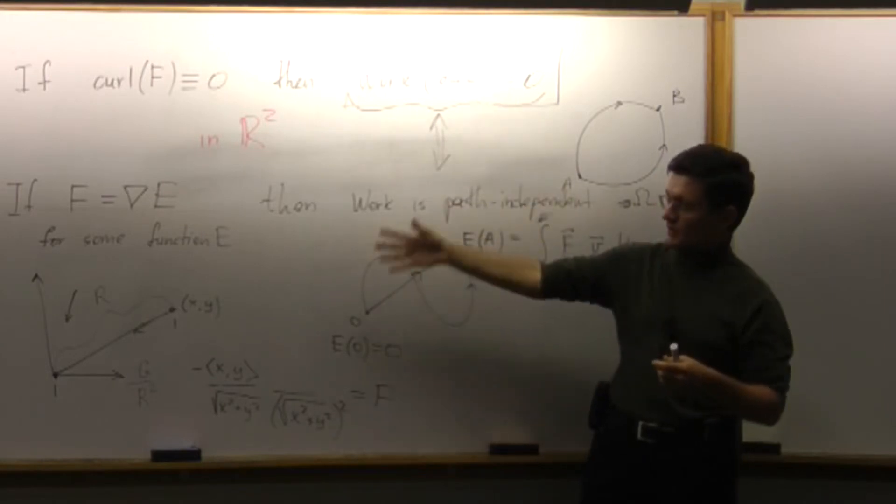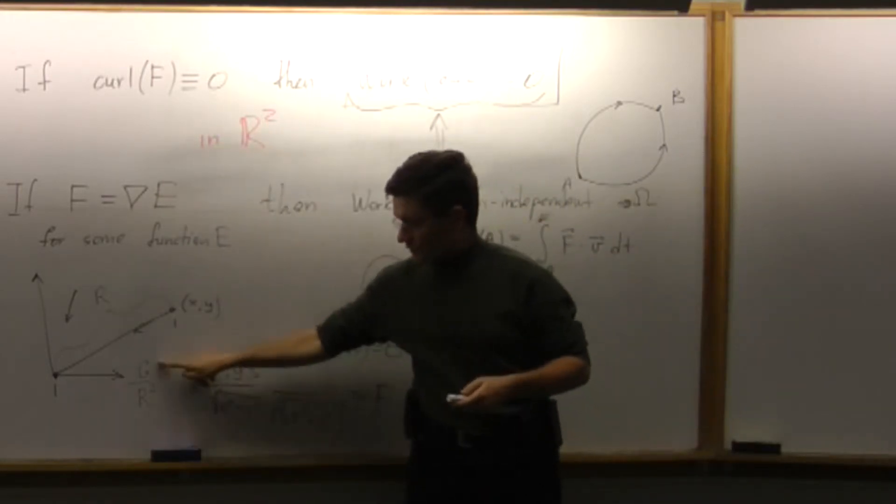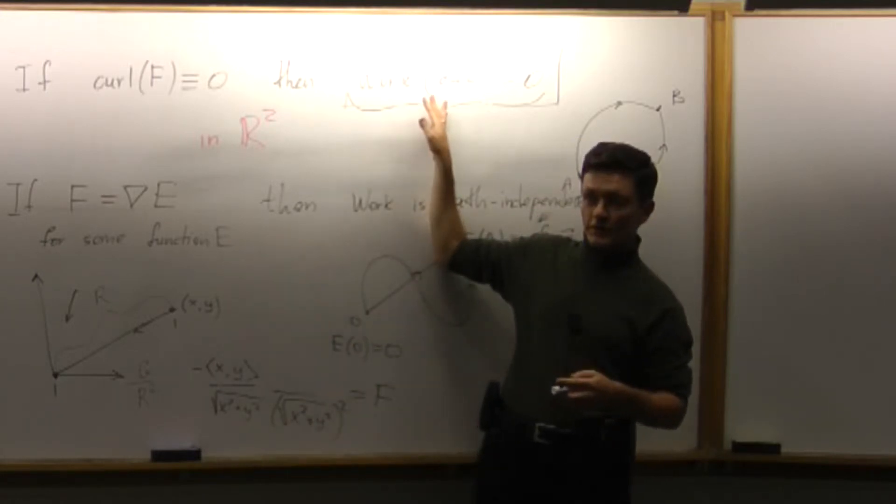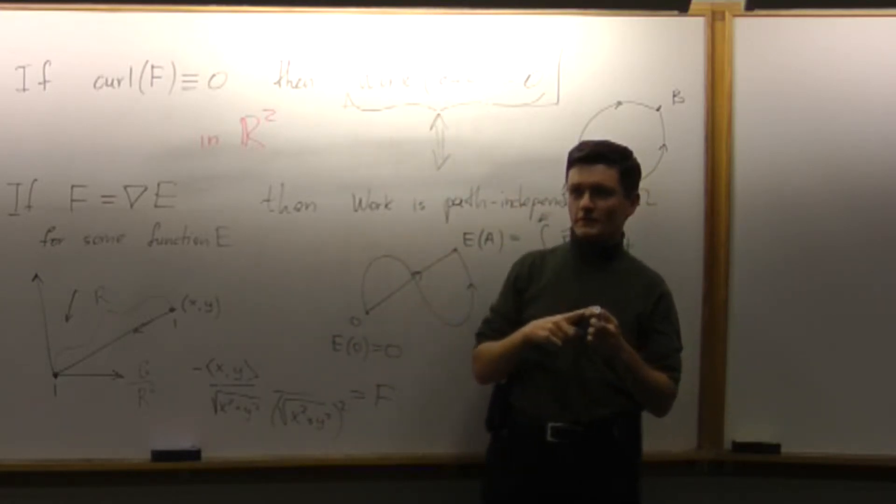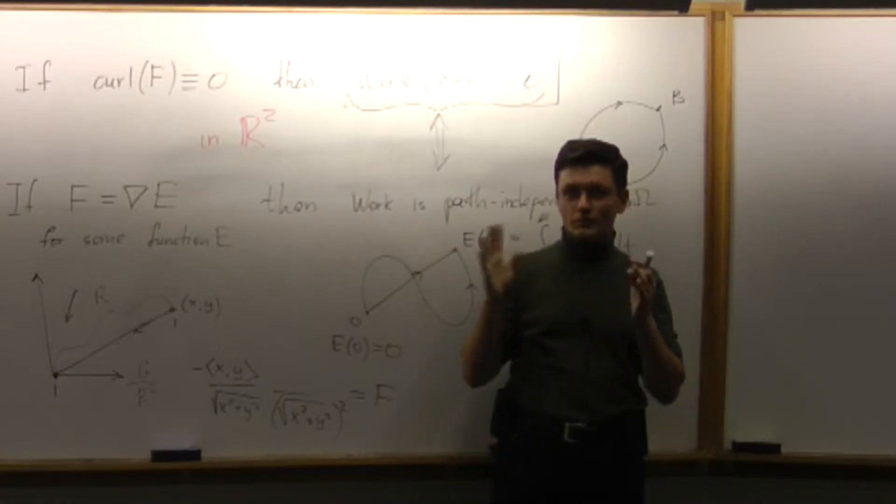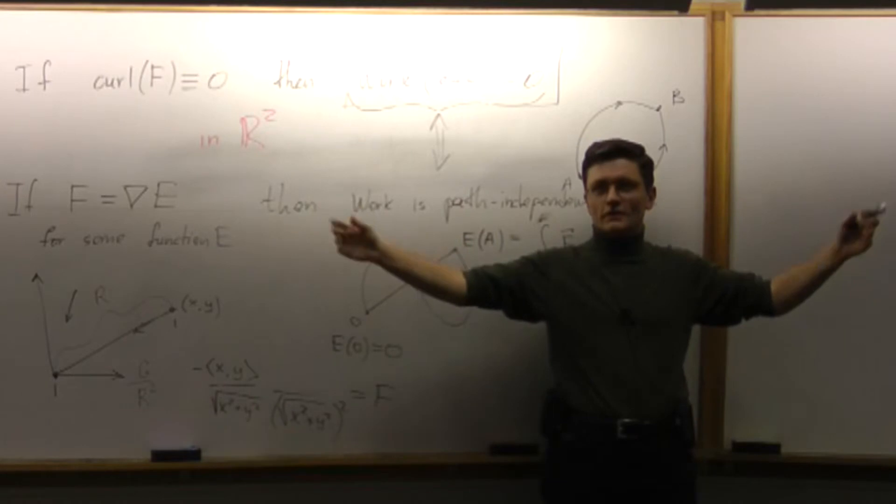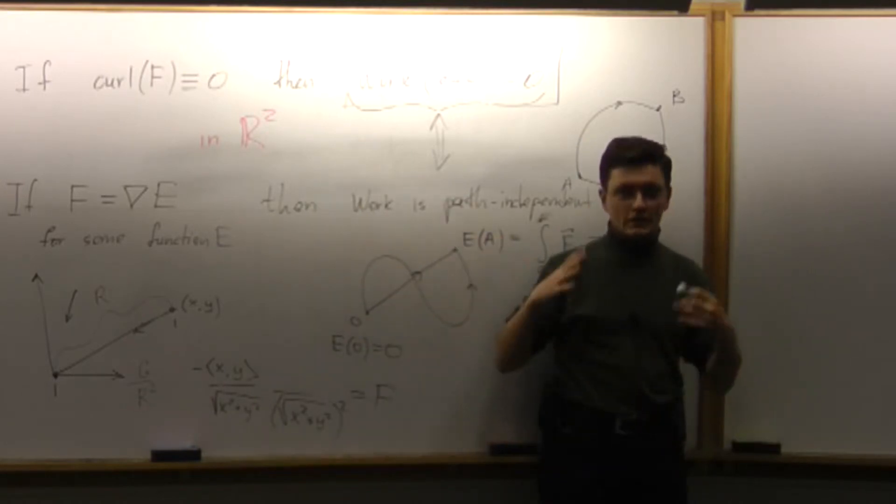And this computation basically says that for this, for gravity vector field, it is impossible to create such a path. I cannot possibly hope to create such a path. Whether small path or large path, here or there, I cannot create it anywhere.